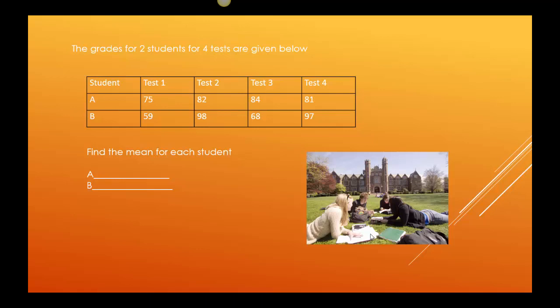So you can see student A had 75, 82, 84, and 81. Student B had 59, 98, 68, and 97.